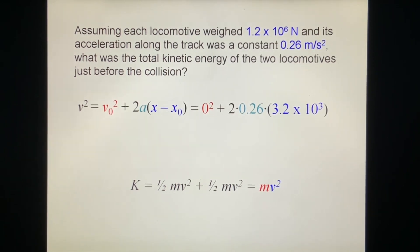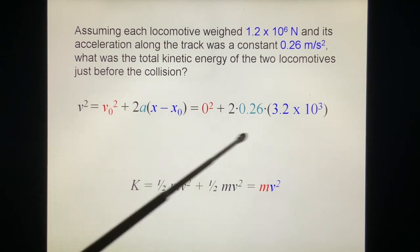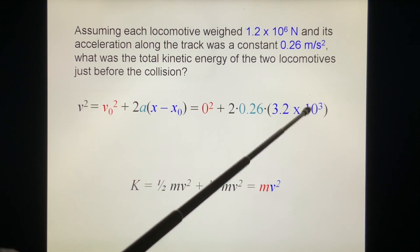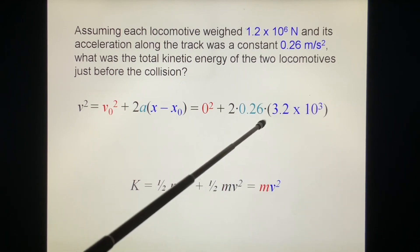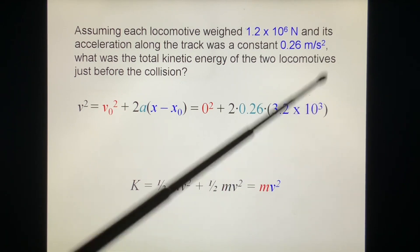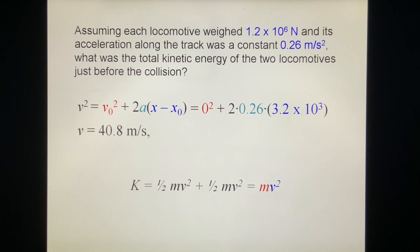And x minus x0 is its distance traveled, is half the track length, 6.4 times 10 to the 3 over 2, that is 3.2 times 10 to the 3. So we calculate that, we get v equals 40.8 m/s. Once you have v, we need m. m is equal to W over g. So we know its weight, weight is mg, so we get m. We put this number inside.